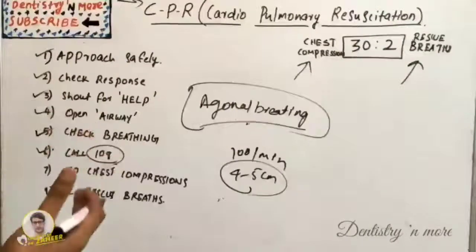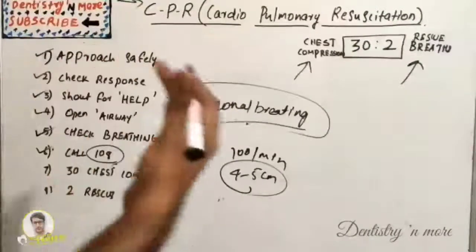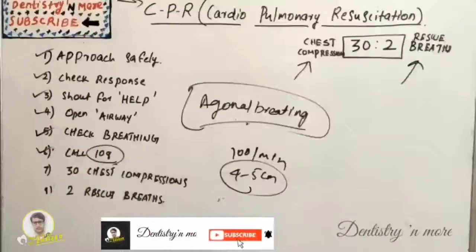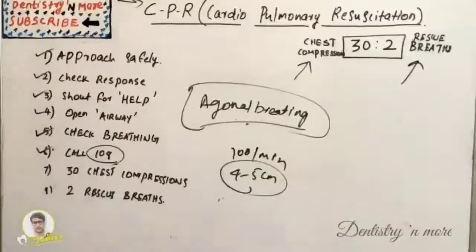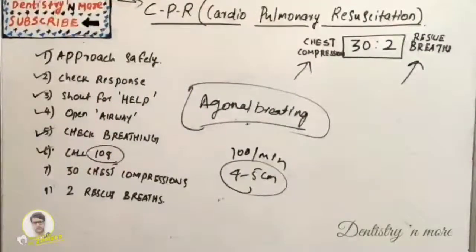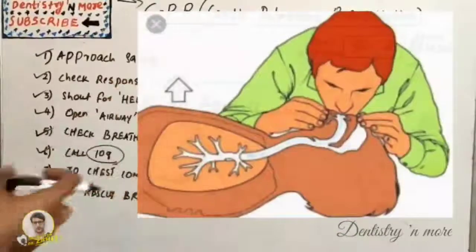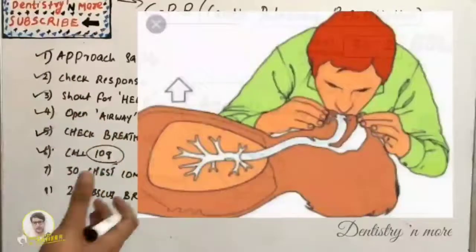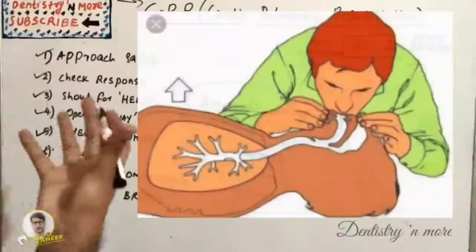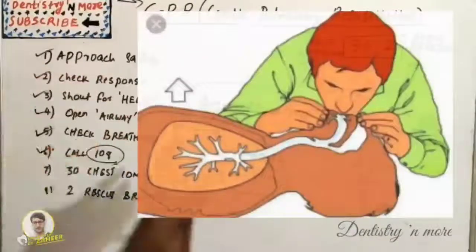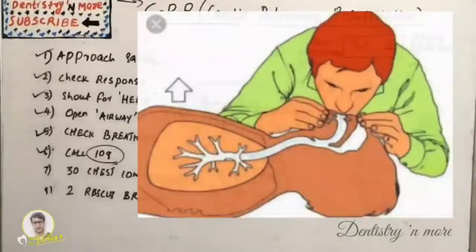If help is available, replace the person doing compressions after every two minutes to avoid fatigue. Once 30 compressions are done, give two rescue breaths: pinch the nose, take a normal breath, place your lips over the patient's mouth, and blow firmly so that the chest rises with the effect of your blow. Then allow the chest to fall and repeat. After every 30 compressions, give 2 rescue breaths.